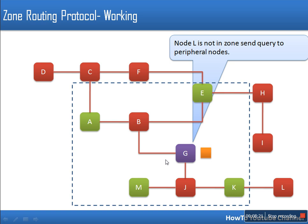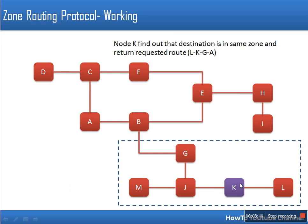Node G finds that node L is outside its zone, so it also forwards the route query packet to its peripheral nodes — M, A, E, and K. When node K receives this packet, it checks whether the destination is in its zone. Because proactive routing is already working inside K's zone, K finds that node L is in the same zone and already has a route for L. So K sends a reply back to node A with the route L-K-G-A.